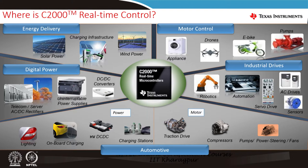In the automotive world, C2000 is also involved in many charging station based applications — HV DC-DC, on-board charging, lighting, and traction drive. So the C2000 real-time control is used across multiple end applications and spans across both digital power and motor control.